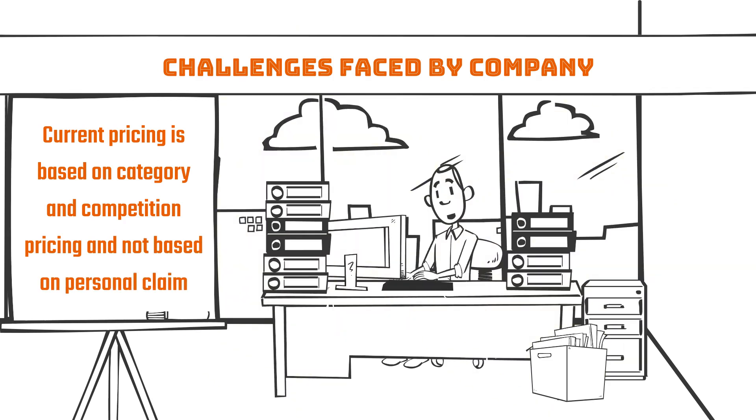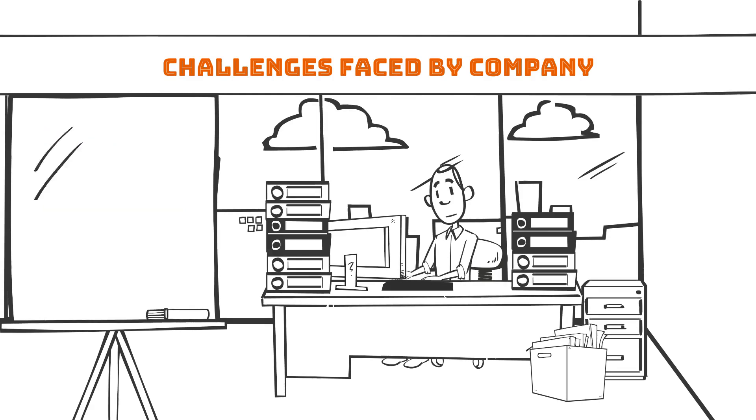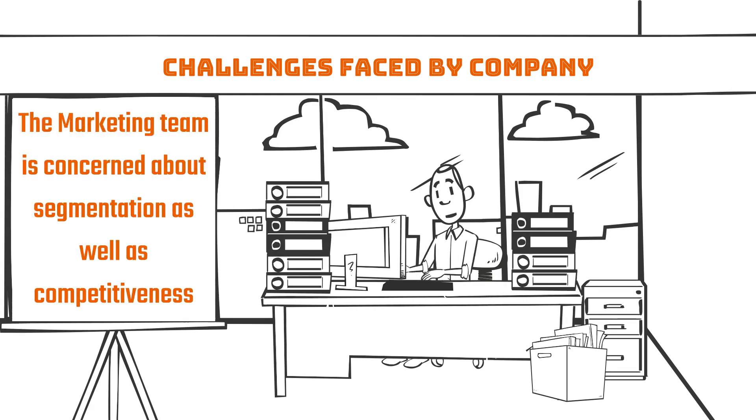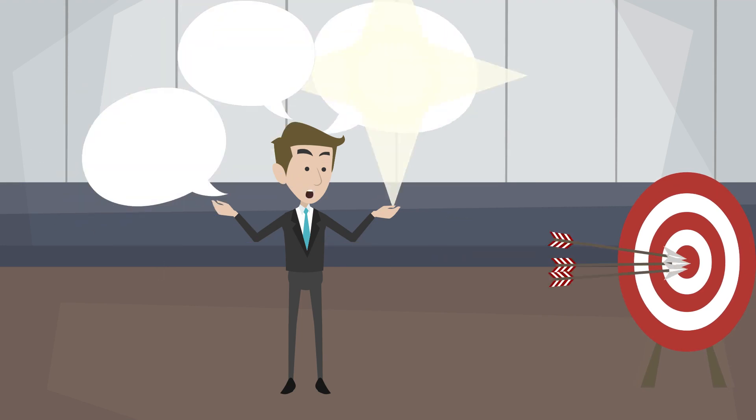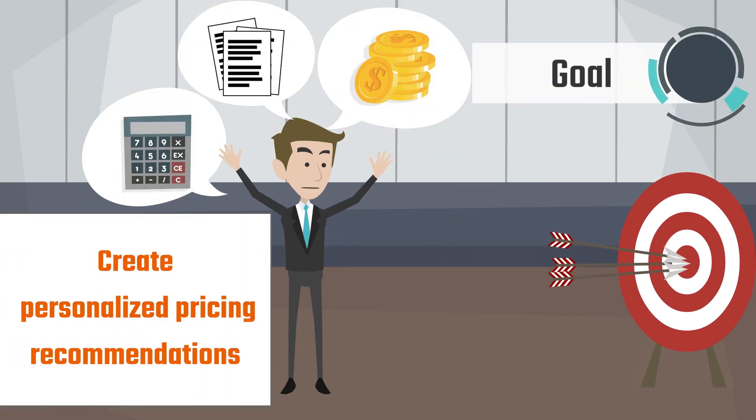Pricing is not based on personal claim and driving history of the customer. The marketing team is concerned about segmentation as well as competitiveness, as there are several other competitors in the market. The goal of the company is to create personalized pricing recommendations based on the historical auto claim data for auto policy customers.